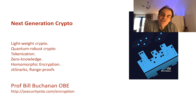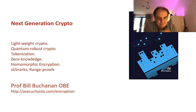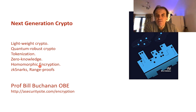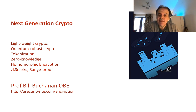Let's look at next generation cryptography. Some of these methods are happening now, some are evolving, and some are very much for the future once processing capabilities catch up. The areas we're going to cover are lightweight cryptography, quantum robust crypto, tokenization, zero knowledge proof, homomorphic encryption, and a bit of ZK-SNARKs and range proofs. We'll focus on the core concepts rather than the mathematics.